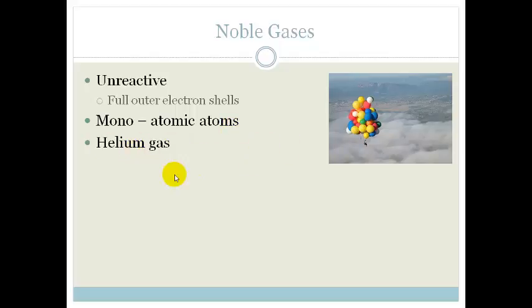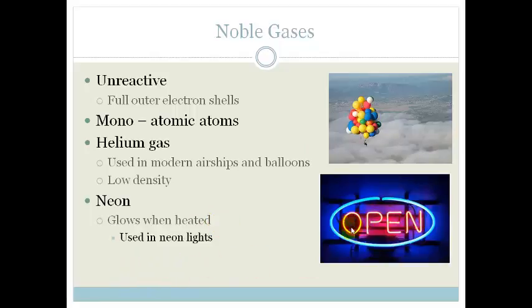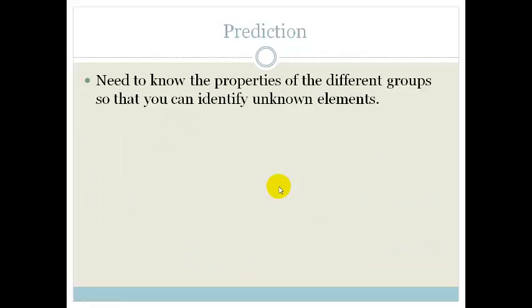Let's look at helium gas. Helium gas is used in airships and balloons. In fact, just recently there was a gentleman who crossed over from Robben Island to Table Bay with a whole bunch of helium balloons. And he did it to raise money for, I think it was the Nelson Mandela Children's Fund. They have got very low density and that is why we can use them in airships and balloons. Neon glows when it's heated. And they are used in neon lights. So, all those fancy neon lights that we see, that's all your neon gas.